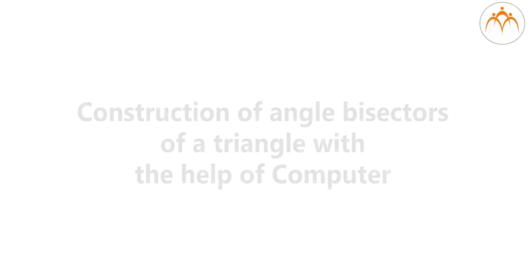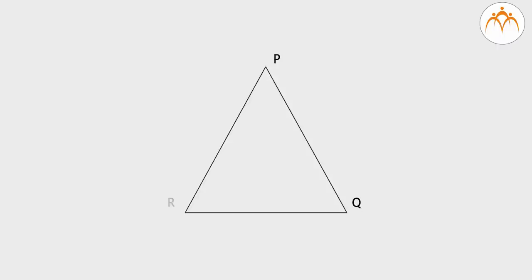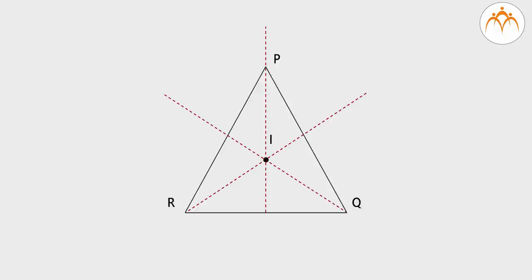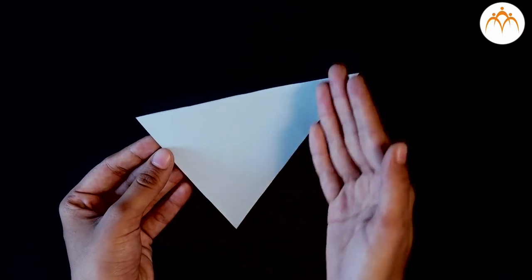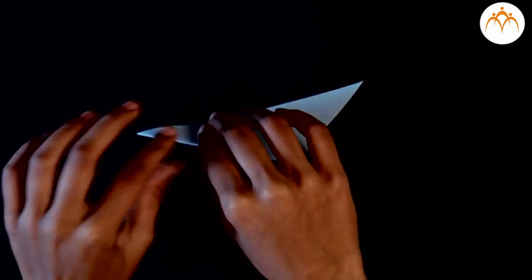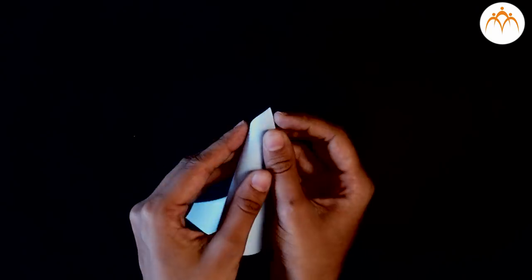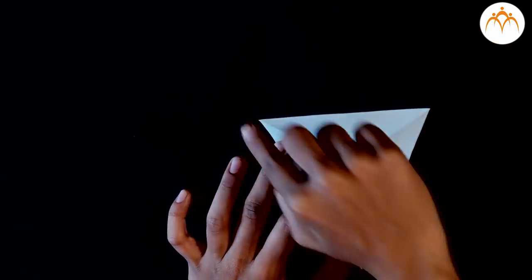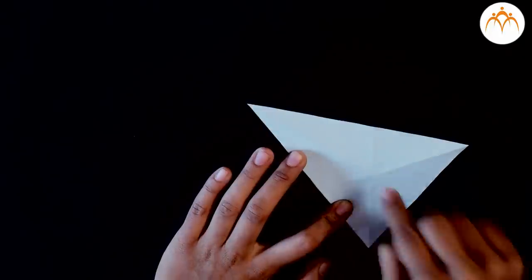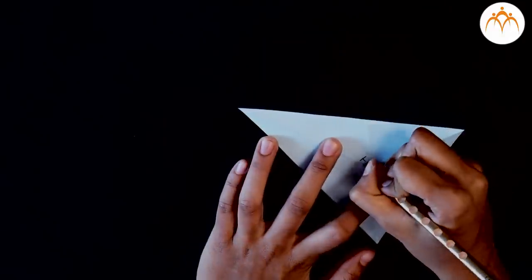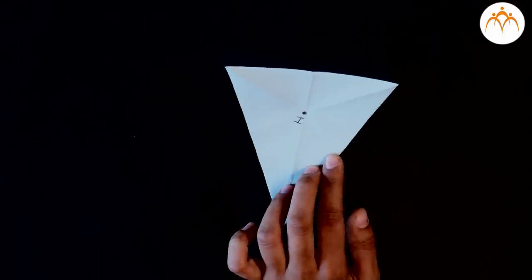Construction of angle bisectors of a triangle with the help of a computer: draw a random triangle, say triangle PQR. Look at the angle bisectors passing through vertices P, Q, and R. We get the point of concurrence I of all three angle bisectors. Through paper folding, use a fold to place one side of the triangle onto the other; unfold to get the crease line through the corresponding vertex, forming the angle bisector. Obtain the angle bisectors of all three angles — all three pass through a single point, they are concurrent, and the point of concurrence is the incenter, denoted by I.